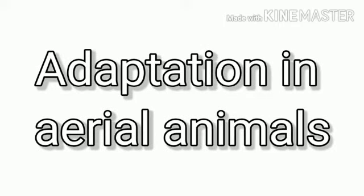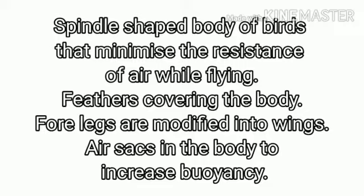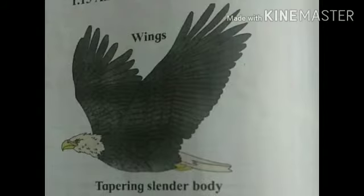Adaptation in aerial animals: birds have a spindle-shaped body that minimizes air resistance while flying, and feathers covering the body, with a tapering cylindrical body. Adaptation in reptiles — for example, lizard and snake. Snakes creep with the help of scales on their skin.